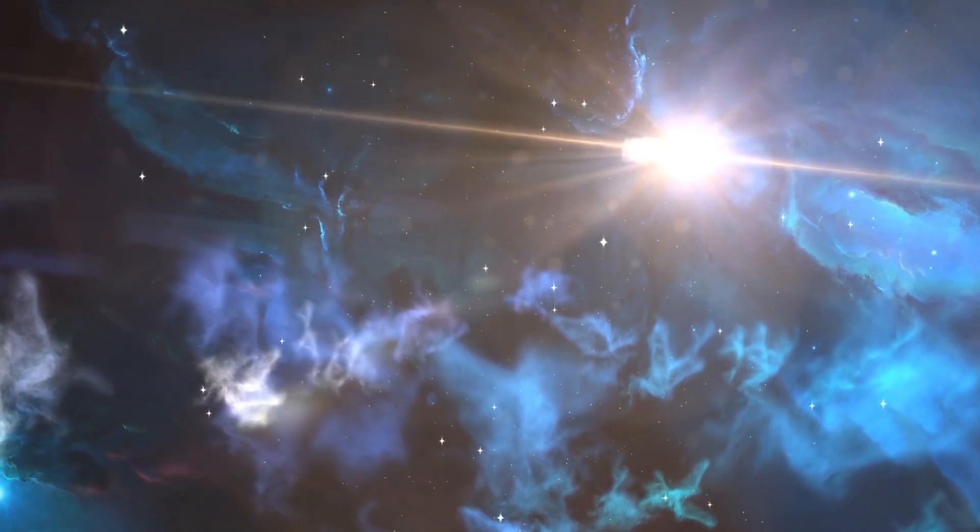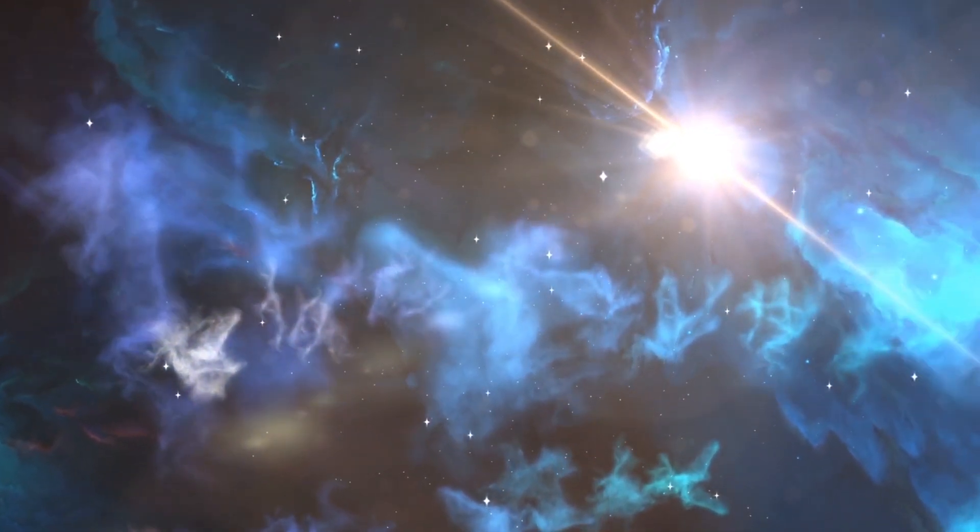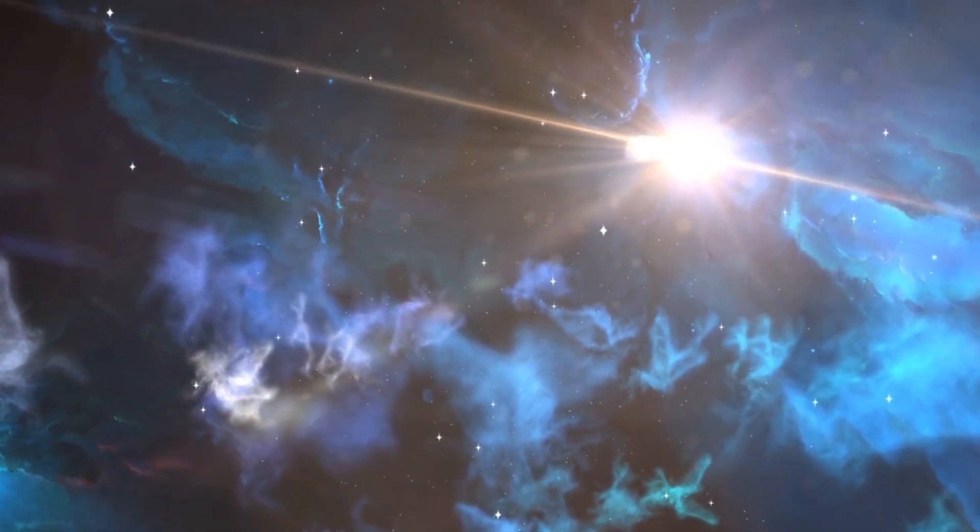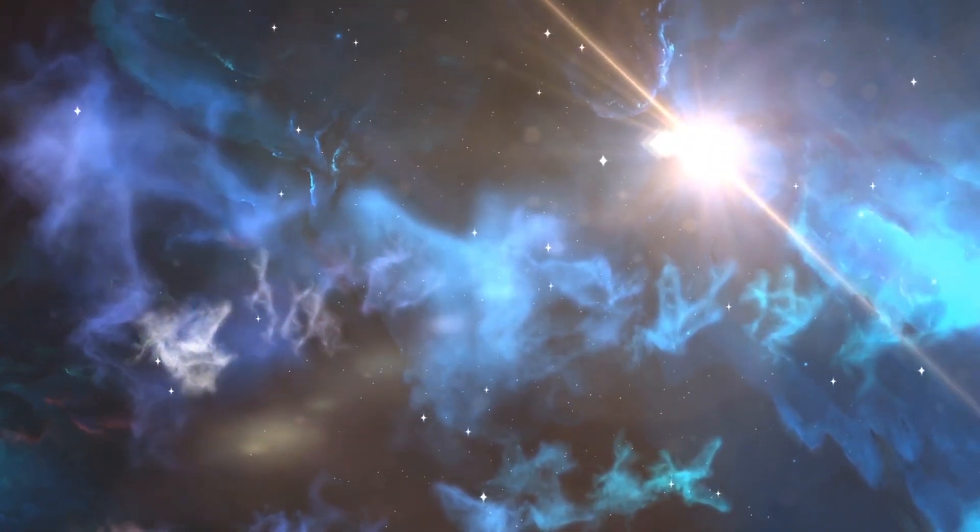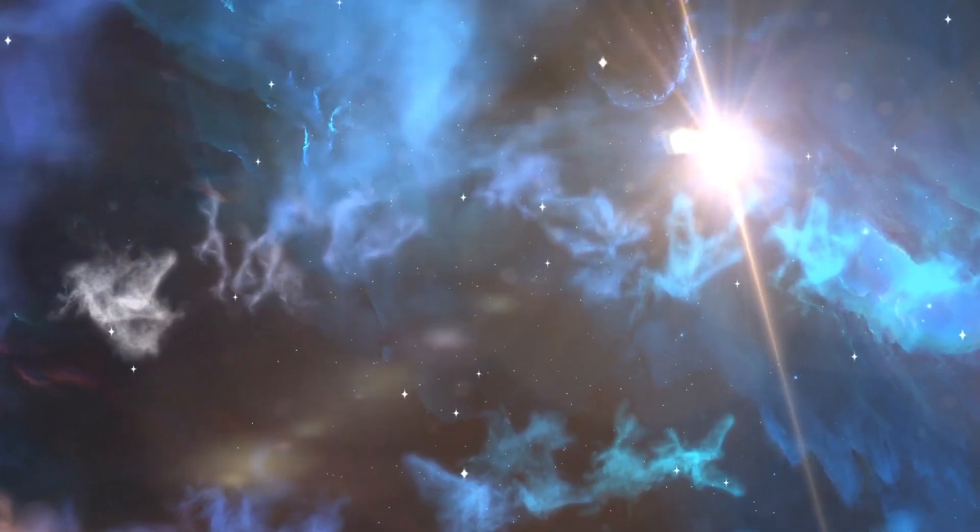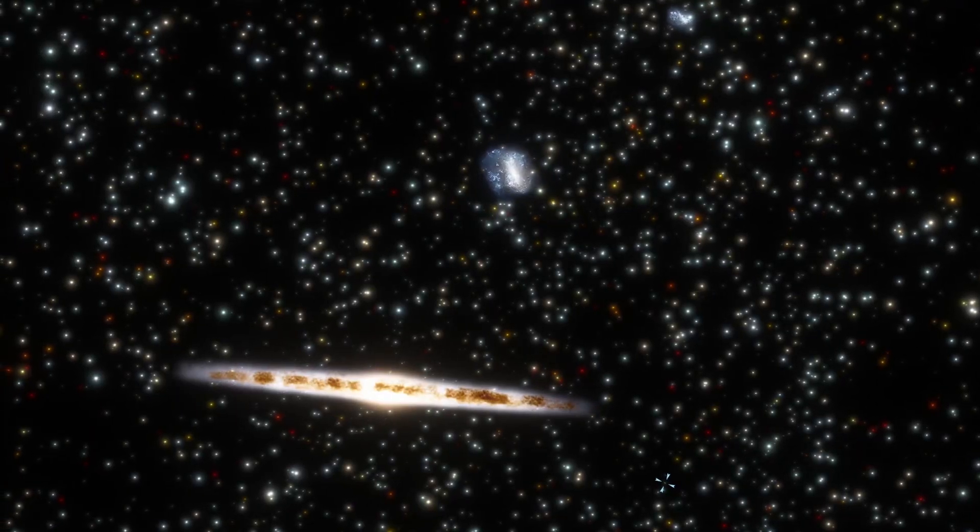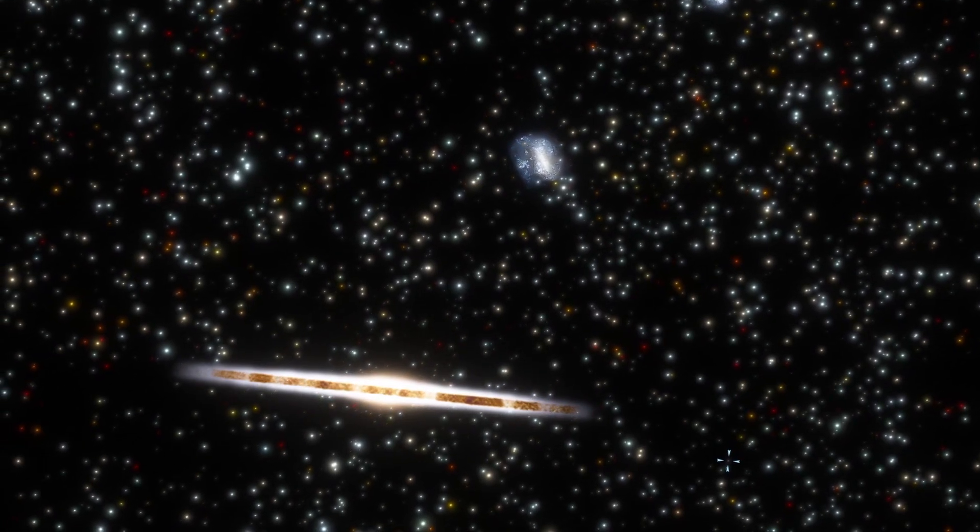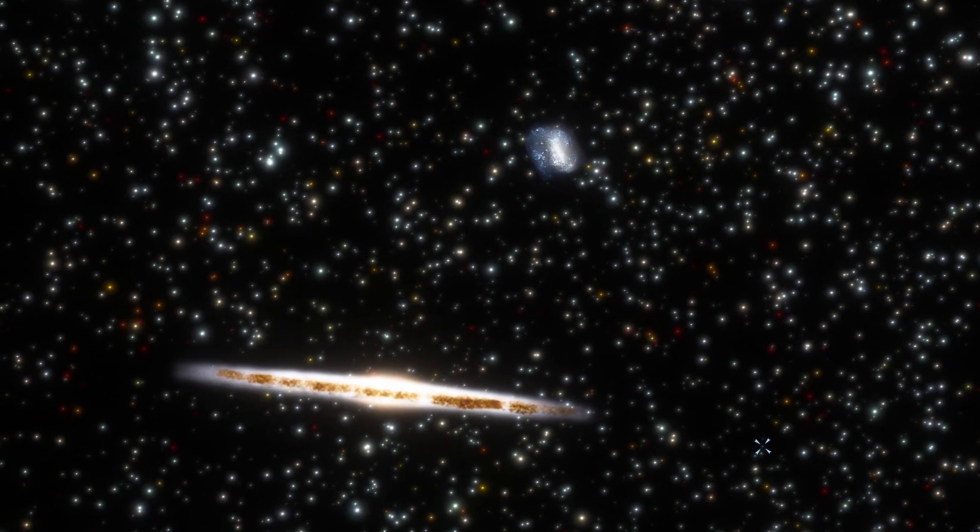But the problem in this case is that normally we expect supernovae to happen only in certain regions of space - for example, in very large, very massive molecular clouds, or other regions of space with very powerful, very massive stars. Maybe certain globular clusters or various regions of space with potentially really massive stars, a lot of starburst regions. But these regions never exist between galaxies. They're never in the intergalactic space. So how exactly did a supernova happen here?